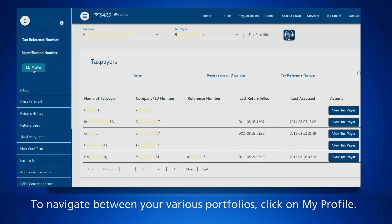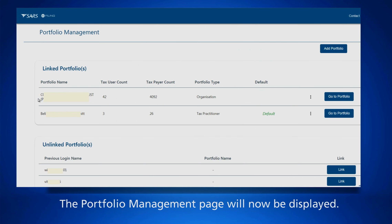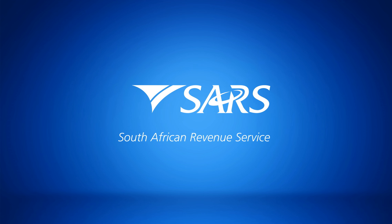To navigate between your various portfolios, click on My Profile, then click on the Portfolio Management submenu. The portfolio management page will now be displayed. Thank you for using SARS e-filing — SARS at your service.